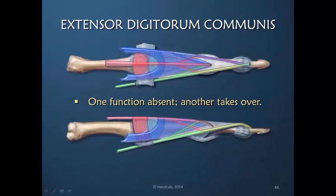One final point: if one muscle is missing in the dorsal apparatus, it is very easy for the other muscles to take over and contribute enough to get the job done. The dorsal apparatus is not dependent upon any one muscle's power — it is dependent upon a balance of muscle power.